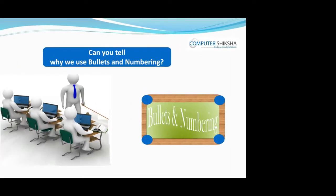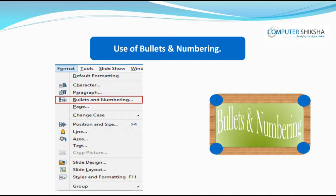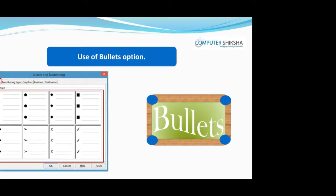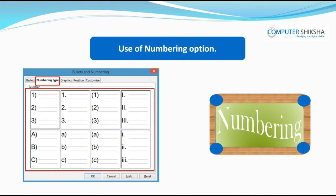Can you tell why we use bullets and numbering? Firstly, if you are making a list and want to put different symbols in front of each line, then you will use the bullets option. Using bullets, you can put bullets in front of each line. If you want to put numbers in front of the lines, you will use numbering.